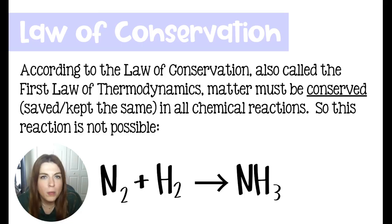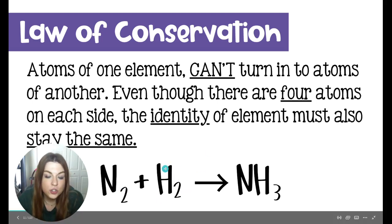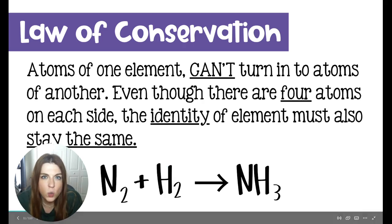According to the law of conservation, all matter has to be conserved. So if we look at this chemical reaction as it's written, it's actually not possible the way that it's written. We can have atoms of one element turn into atoms of another. If we look at this reaction, we have two nitrogens and two hydrogens. In total, that's four atoms.